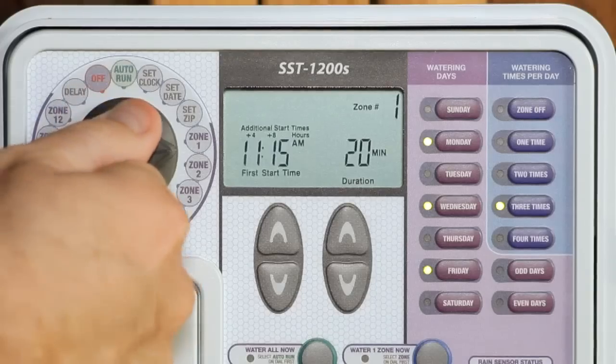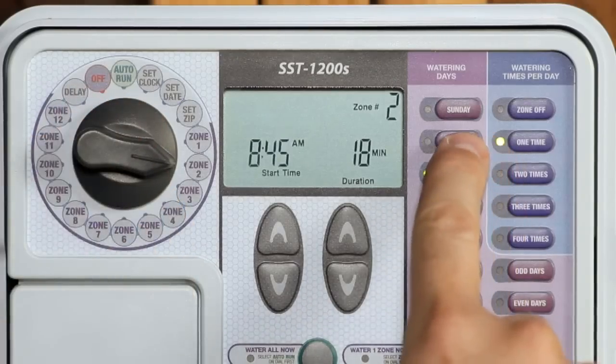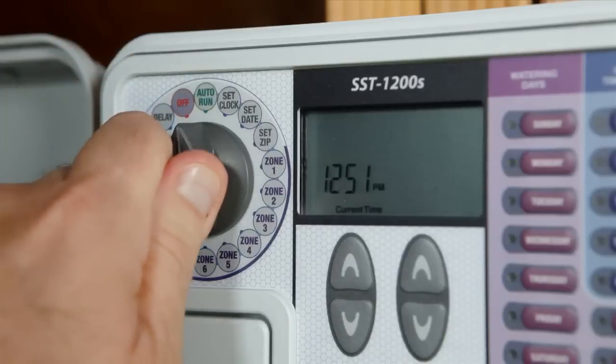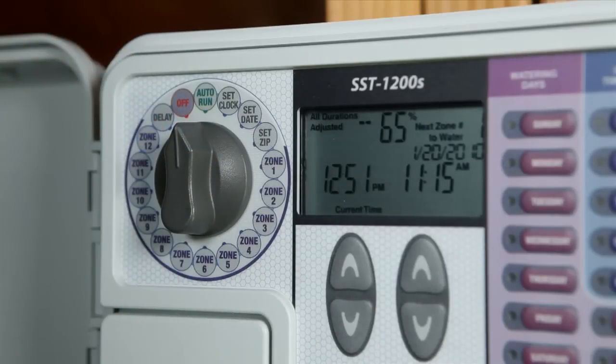To set each of the other zones you're using, simply turn the dial to that zone and repeat the steps we've just followed. When you're done, turn the dial back to auto run. Your controller will now run automatically.